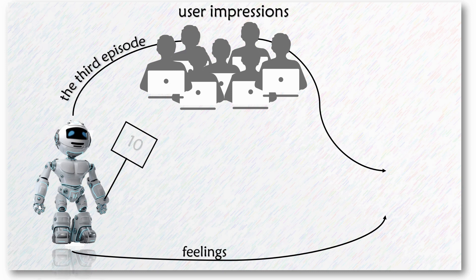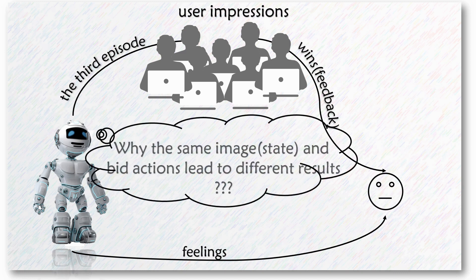In the third episode, based on the last two experiences, the RL machine boy repeats the same action and he wins. This time, he's being totally confused. Why does the same image and bid action lead to different results?